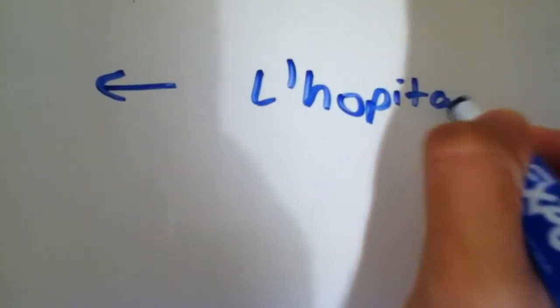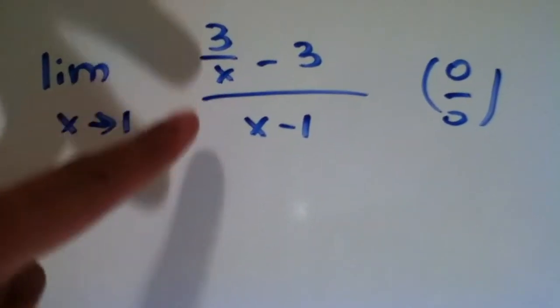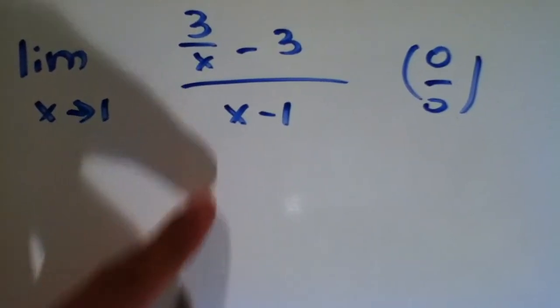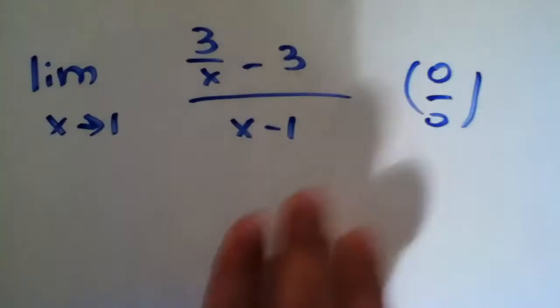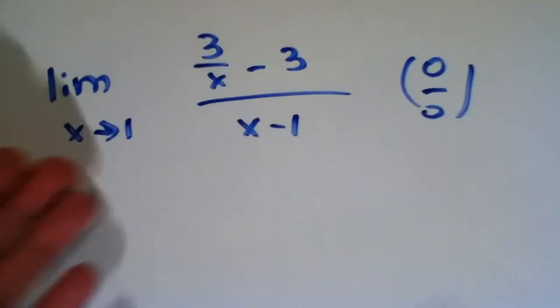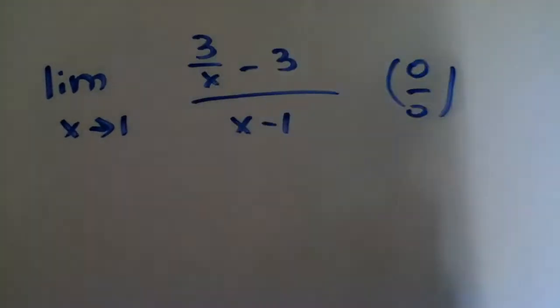And L'Hopital's rule says that if you take the derivative of the top and of the bottom separately, and then you plug in for the 1, you'll get this limit. Because otherwise there's no way to solve this limit, because once you put in this 1, 0 over 0 is undefined.